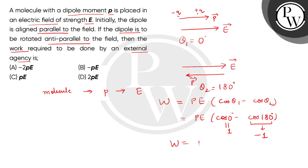So, work done is equal to P E within bracket 1 minus of minus 1 means plus 1. So, this is equals to 2 P E. So, correct answer is option number D. Thank you.